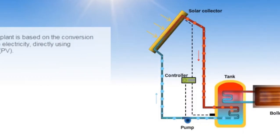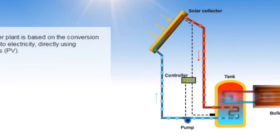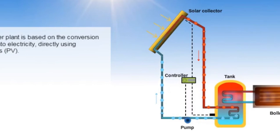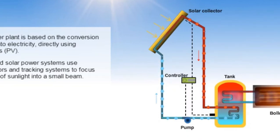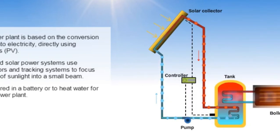A solar power plant is based on the conversion of sunlight into electricity directly using photovoltaics. Concentrated solar power systems use lenses, mirrors, and tracking systems to focus a large area of sunlight into a small beam. It can be stored in a battery or used to heat water for a thermal power plant.